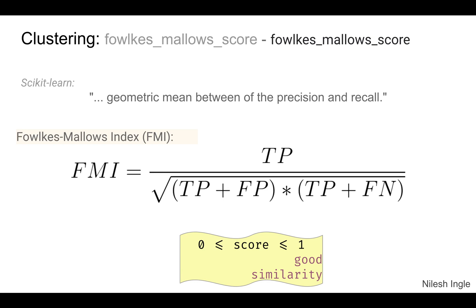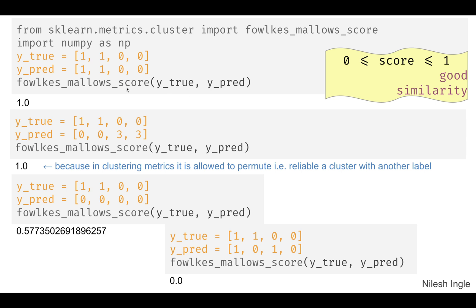The Fowlkes-Mallows score is the geometric mean between precision and recall, given by that relation. A value of one indicates good similarity between actual and predicted labels. The implementation uses fowlkes_mallows_score with y_true and y_pred. As with other clustering metrics, these are unsupervised methods, but labels can be assigned to the dataset to check performance. Permutations are allowed; if data points from clusters mix, the score drops toward zero — here we see values of 0.5 and 0.0.